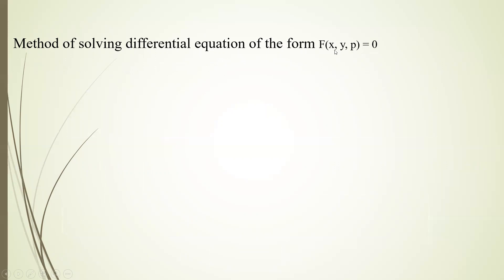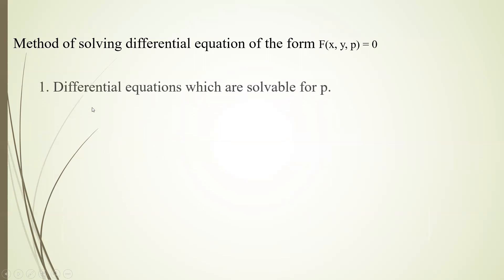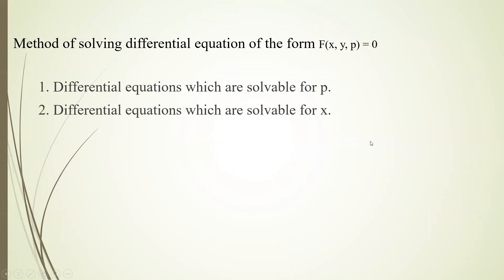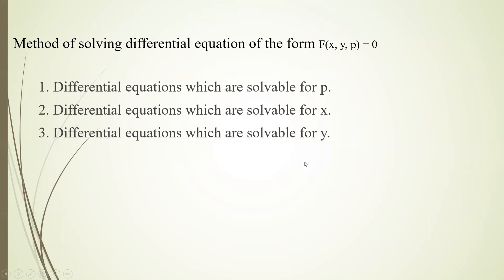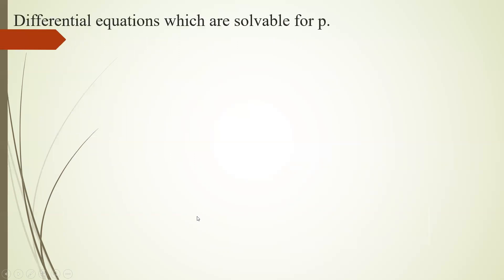Now, the methods of solving f(x, y, p) = 0: first, equations soluble for p; second, equations soluble for x; third, equations soluble for y; and fourth, the Clairaut differential equation. In today's lecture we will learn to solve for p, and in the next lecture we will solve for x and then for y.